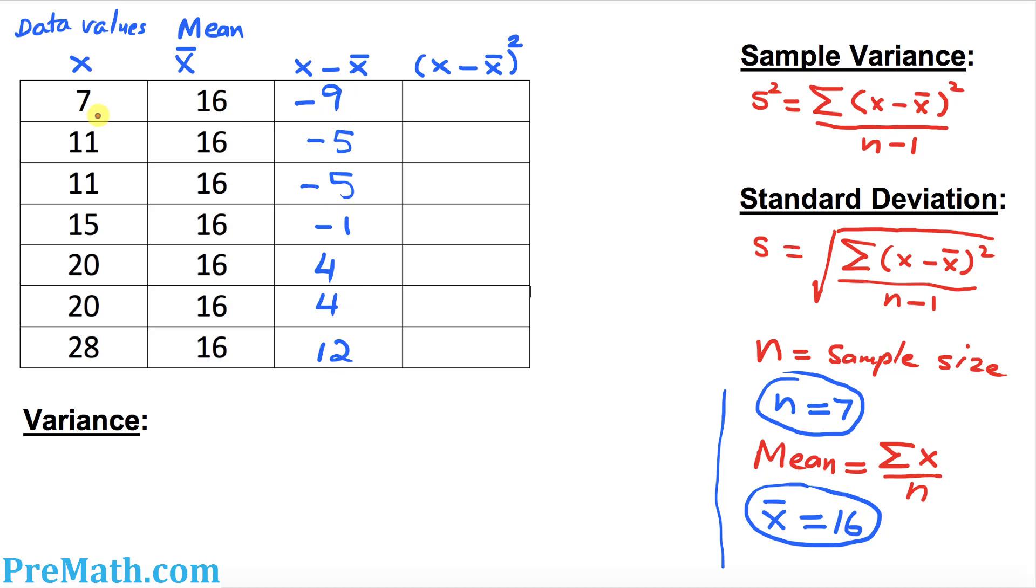And the final column on the right-hand side, we're going to square the values that we just figured out. So negative 9 squared becomes 81, negative 5 squared becomes 25, 25, 1, 16, 16, and 144. That's the very first step.